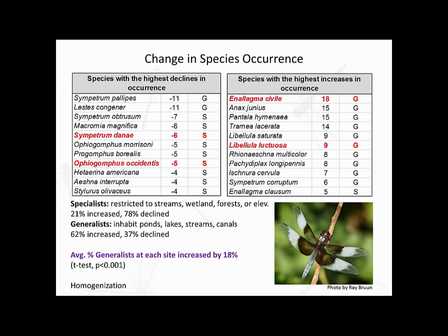We also looked at changes in individual species occurrences. The table on the left shows all species with the highest declines — nearly all are habitat specialists, indicated by 'S', restricted to certain stream types, wetlands, forests, or high elevation areas. Overall, 21% of habitat specialists increased while 78% declined. In contrast, the table on the right shows species with the highest increases, nearly all habitat generalists inhabiting a variety of ponds, lakes, streams, canals, and irrigation ditches. 62% of generalists increased while 37% declined. The average percentage of generalists at each site increased by 18%, and there is significant homogenization of dragonfly assemblages with the expansion of habitat generalists and the decline of specialists.